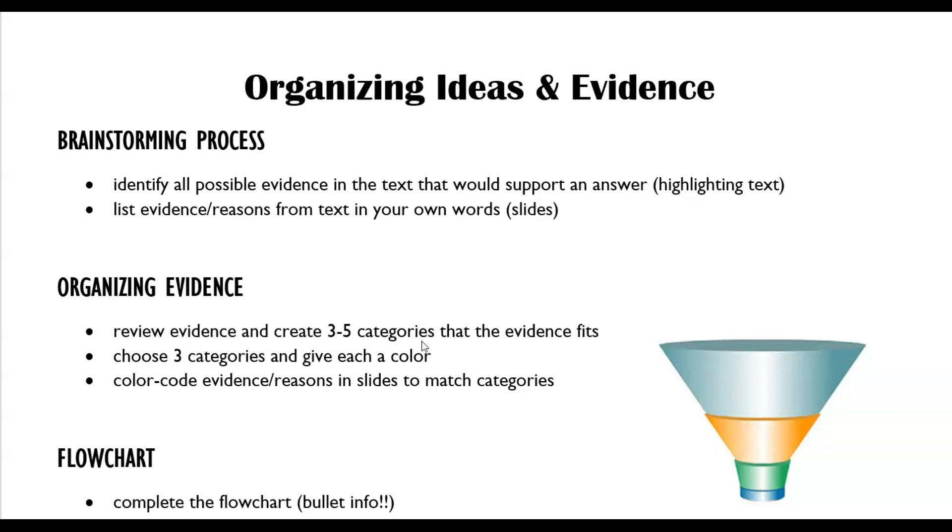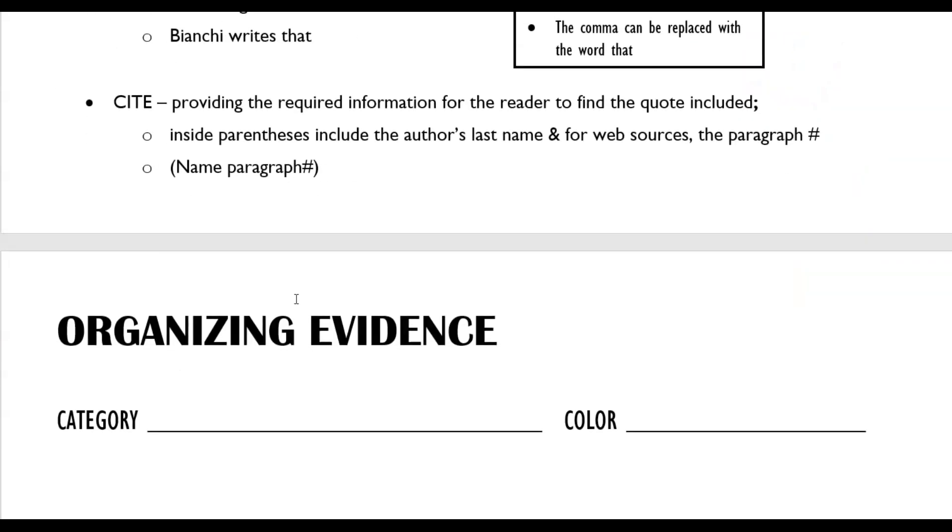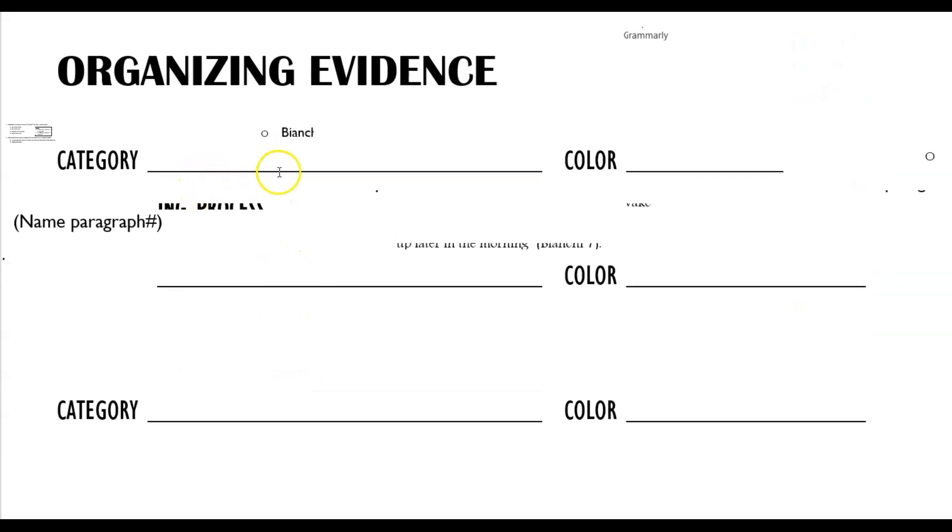How it makes them feel better, emotionally feel better, so that they have better mental health, they're happier. How it helps them feel better physically and they perform in athletics and other physical activities, so that it's better for their physical health. And so those are different areas that the evidence would fit under. So those are like the categories. And on the back of this chart is a place for you to create these categories.